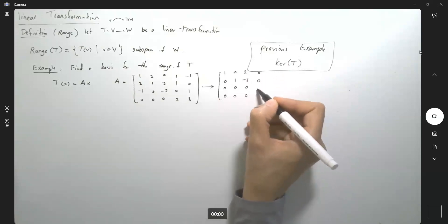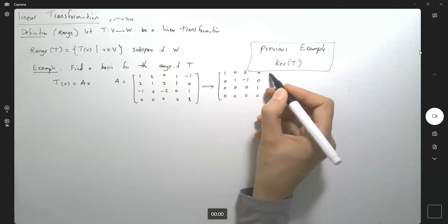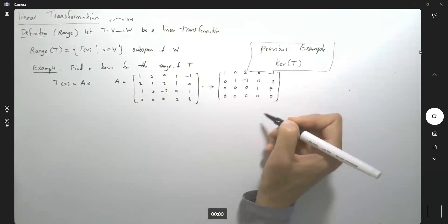0, 0, 1, and 0, and negative 1, negative 2, 4, and 0. Very good.